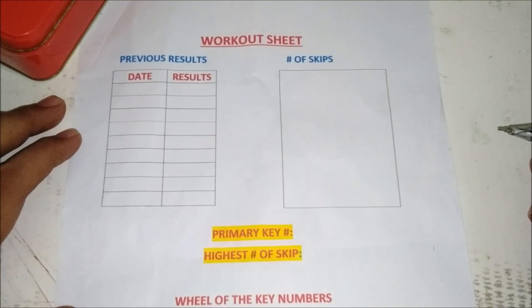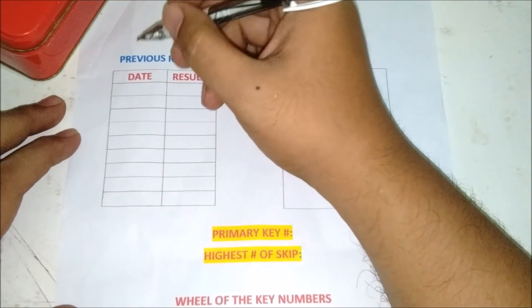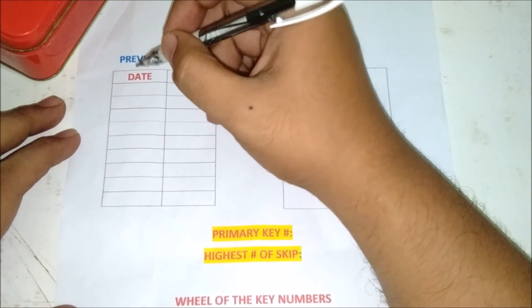We will identify the primary key number and the highest number of skips. So here is the number. Here is the previous result for the Kerala lottery.